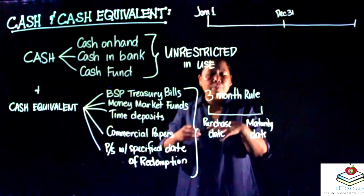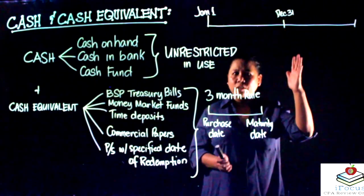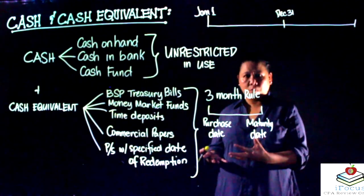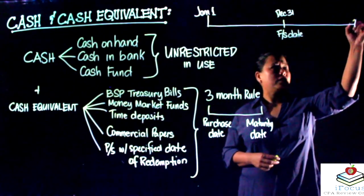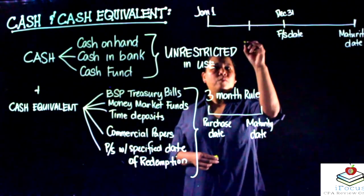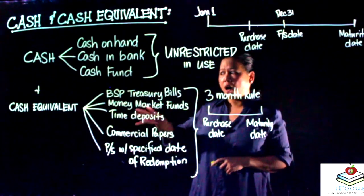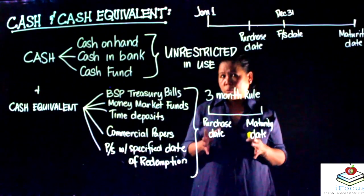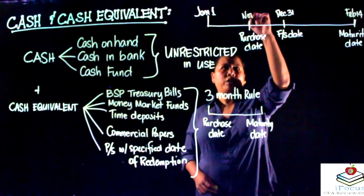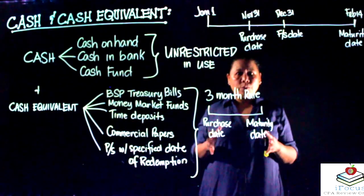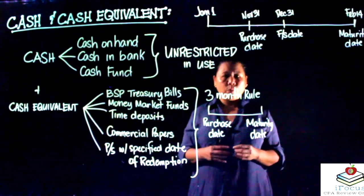As accountants, we prepare financial statements dated at the end of the year — December 31st — which is our financial statement date. To classify an instrument as a cash equivalent, the period from the purchase date to the maturity date must fall within three months. For example, if the maturity date is February 14th and the purchase date is November 30th, that falls within three months and qualifies as a cash equivalent.